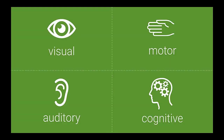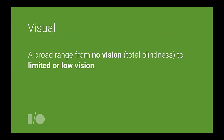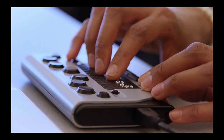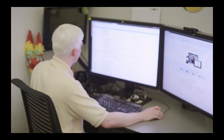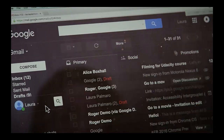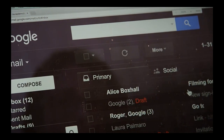We can roughly split this into about four categories: disabilities affecting visual senses, motor and dexterity, auditory senses, and cognitive senses. Visual impairment spans a broad range — from users who are completely blind to those with limited or low vision. Users with no vision may be using a screen reader like TalkBack on Android, or a Braille reading device. Users with limited or low vision may use screen magnification, a screen reader, or high contrast mode in the browser to increase the legibility of text on screen.